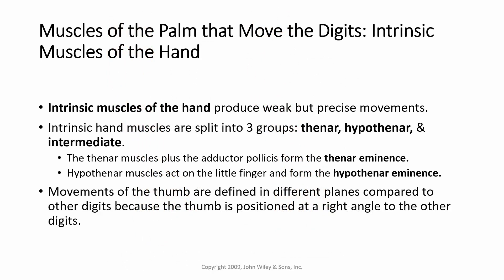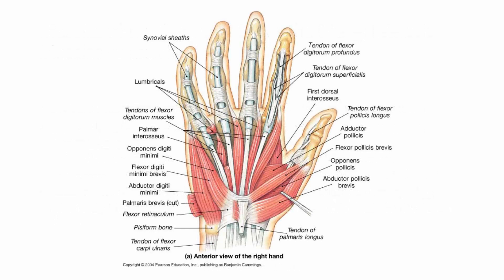Now, muscles of the palm that move the digits — intrinsic muscles of the hand — produce weak but precise movements. They are split into three groups: thenar muscles, hypothenar muscles, and intermediate. The thenar muscles plus the adductor pollicis form the thenar eminence, which is that round bump of muscle by your thumb on your palm. The hypothenar muscles act on the little finger and form the hypothenar eminence, the bump on your palm by your little finger. The movements of the thumb are defined in different planes compared to other digits because the thumb is positioned at a right angle to them.